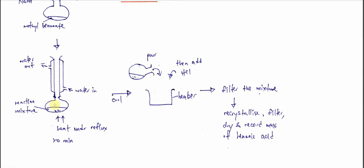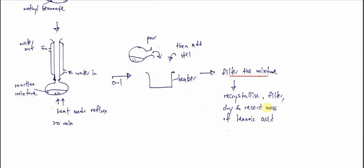After the hydrolysis, the reaction mixture needs to be cooled, then poured into a beaker. After pouring into the beaker, we add HCl to acidify the mixture. After acidification, we see the benzoic acid as a white precipitate. Then we filter the mixture, and the white precipitate — the benzoic acid — is obtained. It will then undergo recrystallization, be filtered again, dried, and the mass recorded.